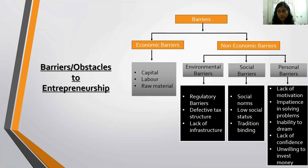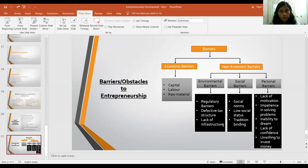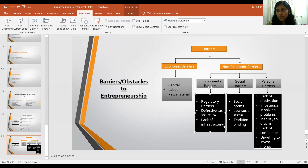The third environmental barrier is lack of infrastructure. Lack of infrastructure facilities like land and building, adequate and cheap power, proper transportation, water, and other facilities acts as a barrier to entrepreneurship. The fourth environmental barrier is defective administrative and compliance systems — mistakes in administrative systems, red tape, corruption, and excessive paperwork all act as barriers to entrepreneurship.